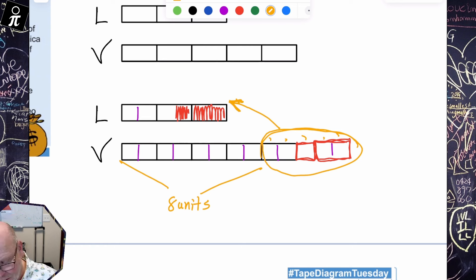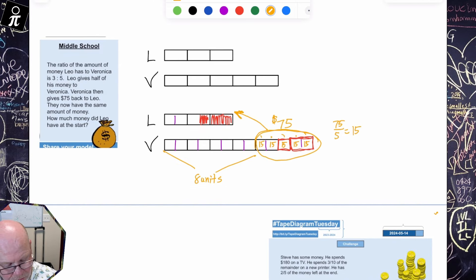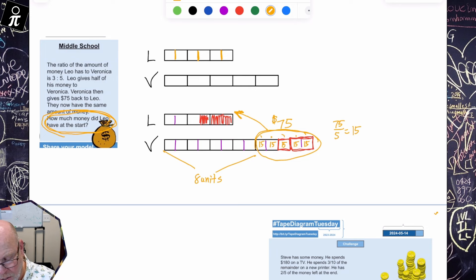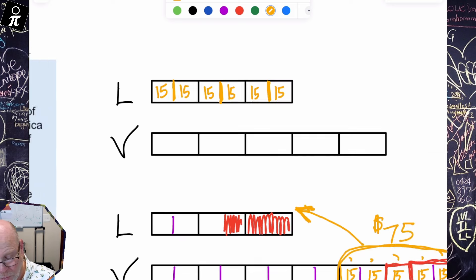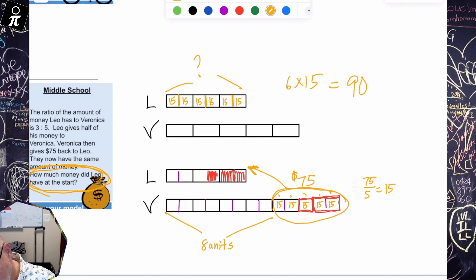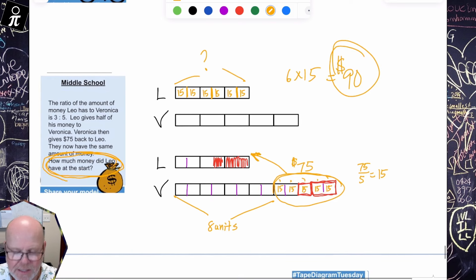So now Leo would have eight units and Veronica would have eight units. So they both will have eight units, but we're told that this amount is $75. So 75 divided by five, 75 divided by five is 15. So that tells us each of these tiny little units is 15. So now we know something that's important. It says, how much money did Leo have at the start?